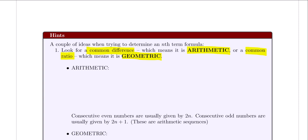An arithmetic sequence is a sequence of numbers where each term after the first is obtained by adding a fixed constant number called the common difference to the preceding term. Here's an example: the terms are 2, 5, 8, 11, and 14. This is arithmetic because between each term there is a common difference of 3 — you're adding 3 each time. This common difference is normally represented by d.